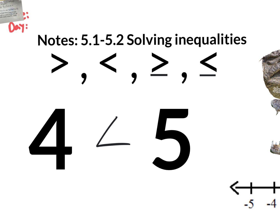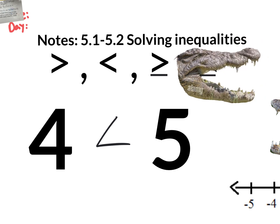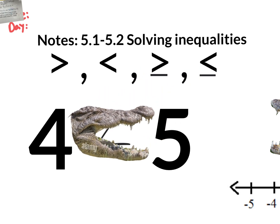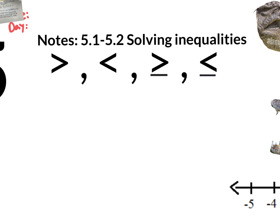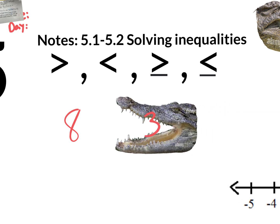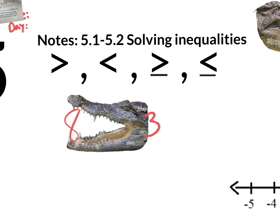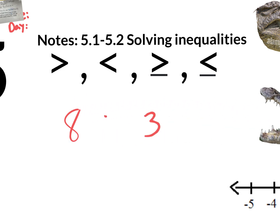In case you forgot which one's less than and which one's greater than, you could think of a hungry alligator — it wants to eat the bigger value. So obviously it's going to open up to the 5. Now let's say we had an 8 and a 3. It wants to eat the 8 because 8 is bigger than 3, so it would open up to the 8. Very basic skills that we already should know.